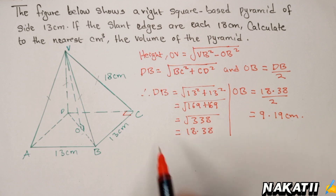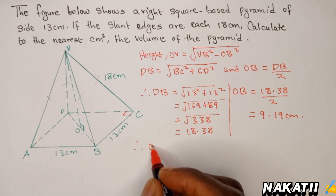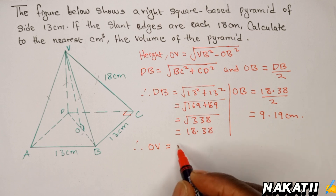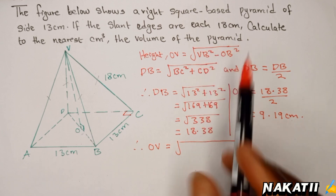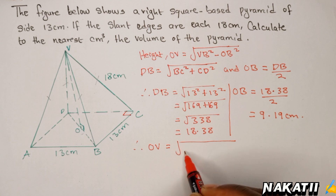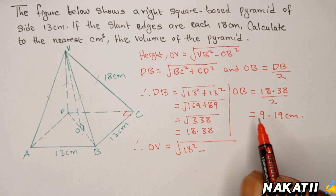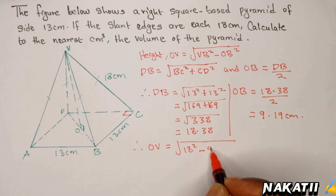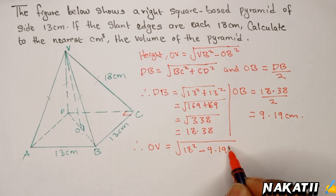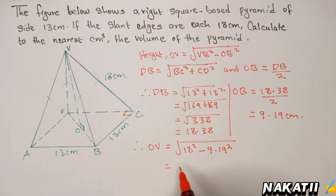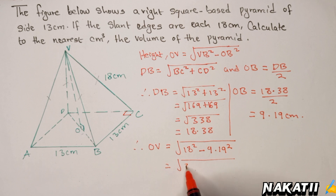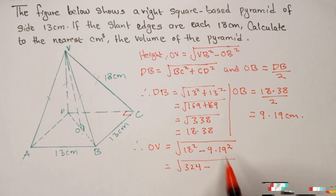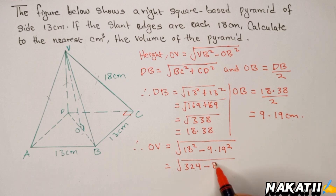This is OB, but we want the perpendicular height OV. We're going to say OV equals the square root of VB squared — which is 18 squared — minus OB squared, which is 9.19 squared. Using your calculator: 18 squared is 324, minus 9.19 squared which is 84.4561.